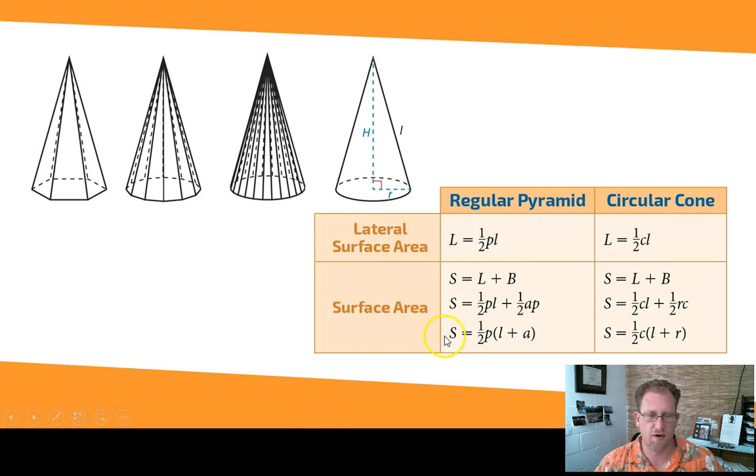Take a look at the two formulas next to each other. For a regular pyramid, the surface area is one half times the perimeter times the sum of the slant height and the apothem. Here, the surface area is one half times the circumference, same thing as a perimeter, right? Times the sum of the lateral area and the radius, which stands in places of the apothem. So when you compare these equations, one half times CL instead of one half times PL, and one half times C times the sum of L and R, you see that this is the same logic. Pyramids and cones can do each other's math.